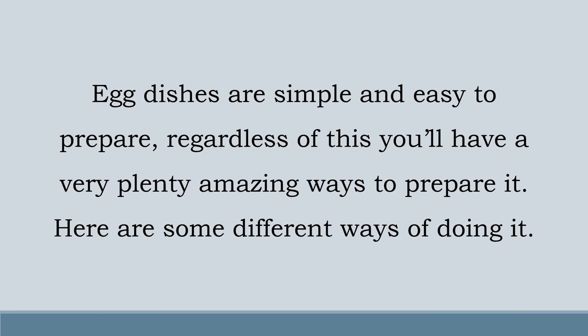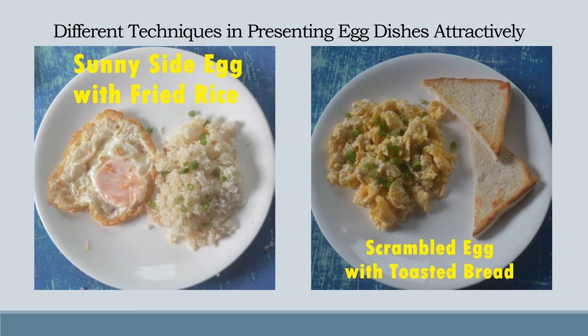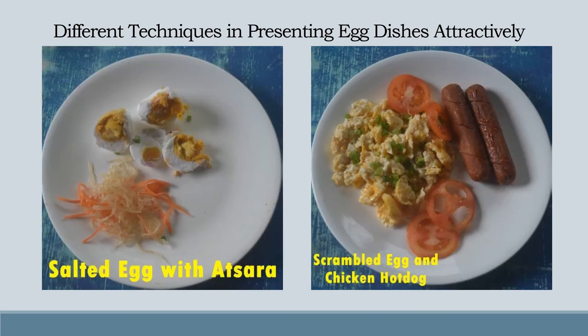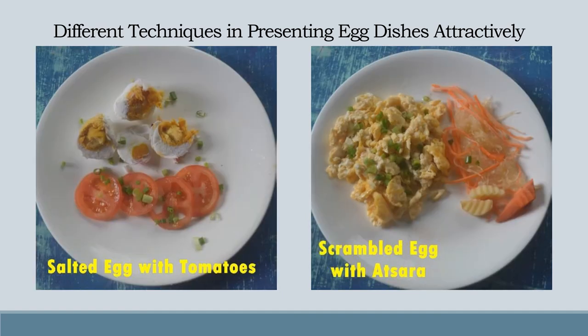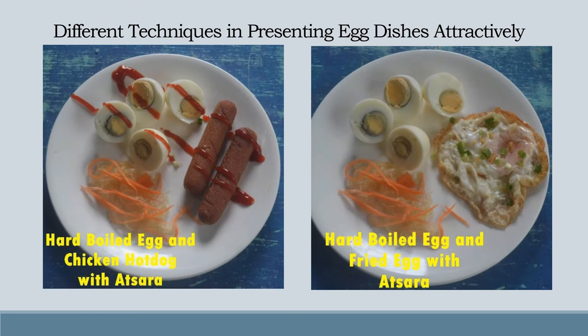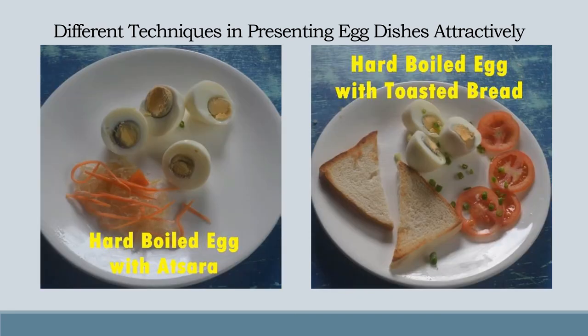Egg dishes are simple and easy to prepare. Regardless of this, there are very plenty of amazing ways to present them. Here are some different techniques in presenting egg dishes attractively: sunny side egg with fried rice, scrambled egg with toasted bread, salted egg with toasted bread, scrambled egg and chicken hot dog, salted egg with tomatoes, scrambled egg with mozzarella, hard boiled egg and chicken hot dog with mozzarella, hard boiled egg with mozzarella, and hard boiled egg with toasted bread.